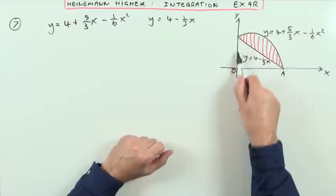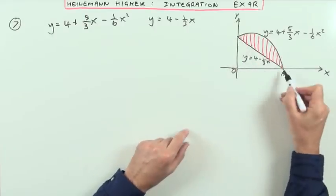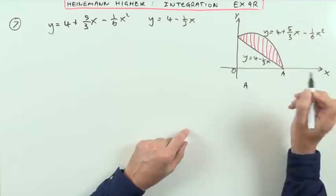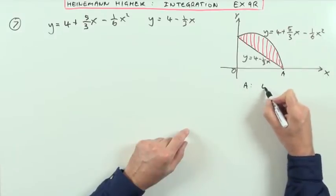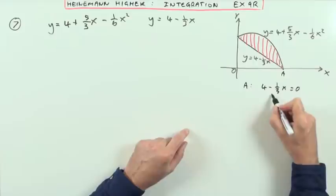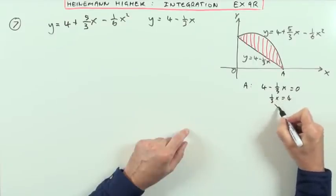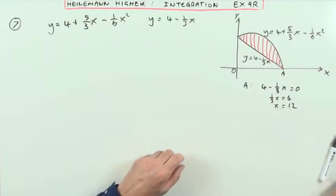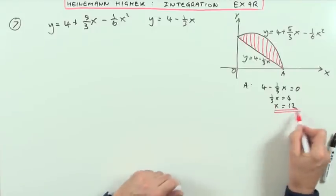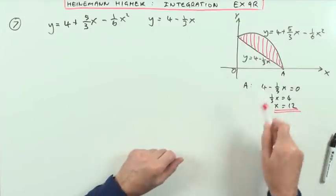So obviously that's on the y axis, so x is zero. And here, if y is zero for that point A as I've called it here, then that simply means that 4 minus a third of x should equal zero. So a third of x should equal 4, so x should equal 12, which means the area I'm working out is the area from zero to 12.